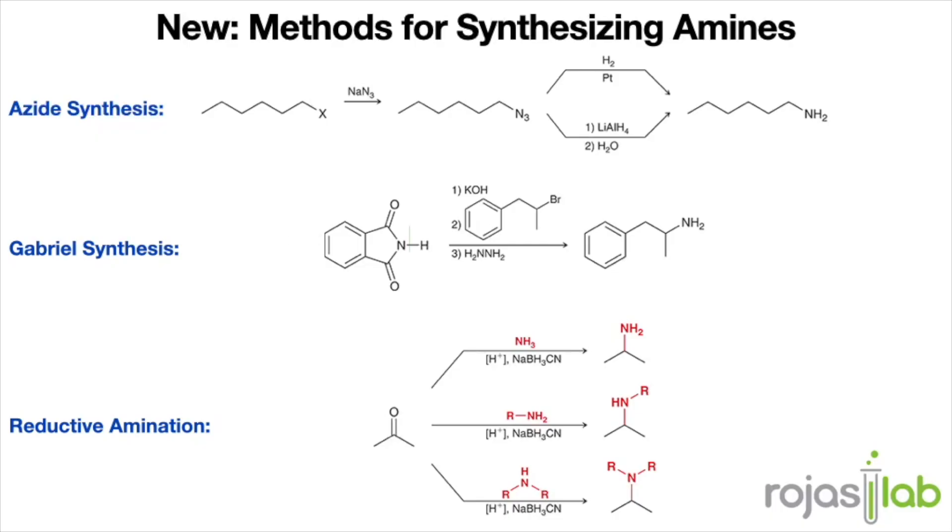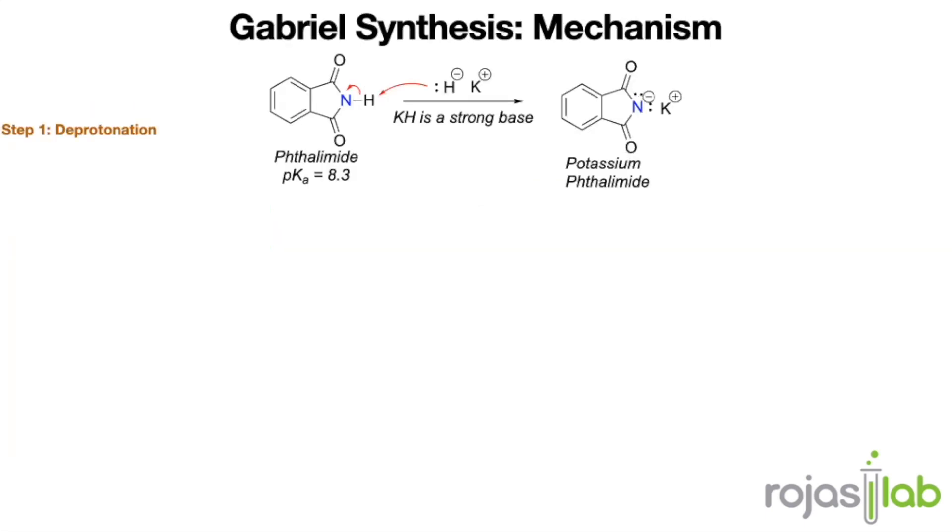The Gabriel synthesis is another method for the formation of primary amines through the reaction of a phthalimide salt with an alkyl halide via an SN2 reaction. In phthalimide, a nitrogen is flanked by two carbonyl groups. This means that the NH bond is a lot more acidic than it normally would be because the resulting anion would be resonance-stabilized.